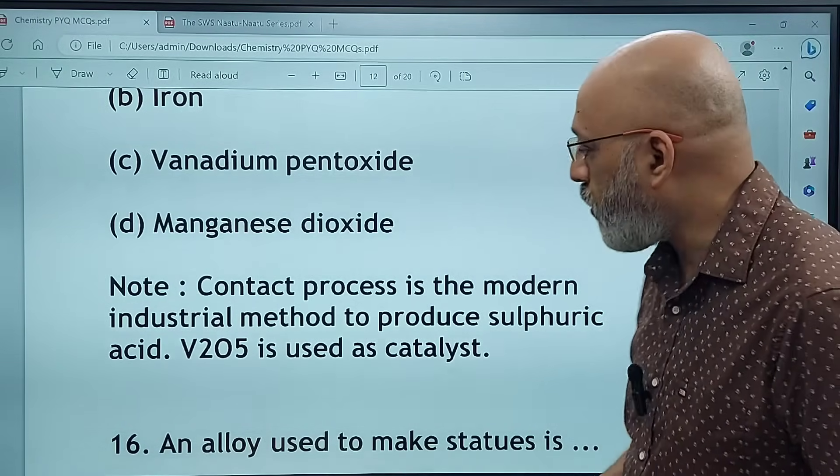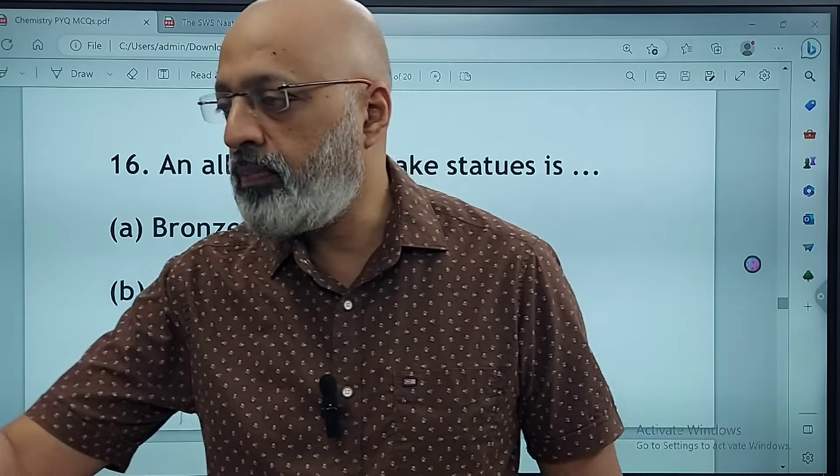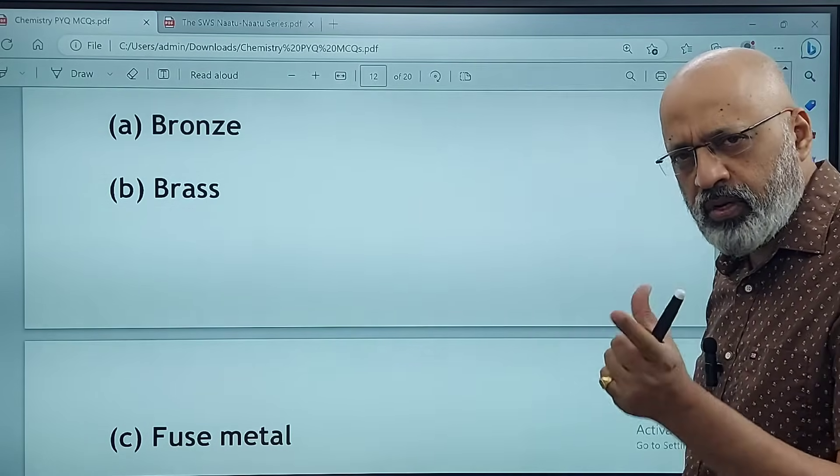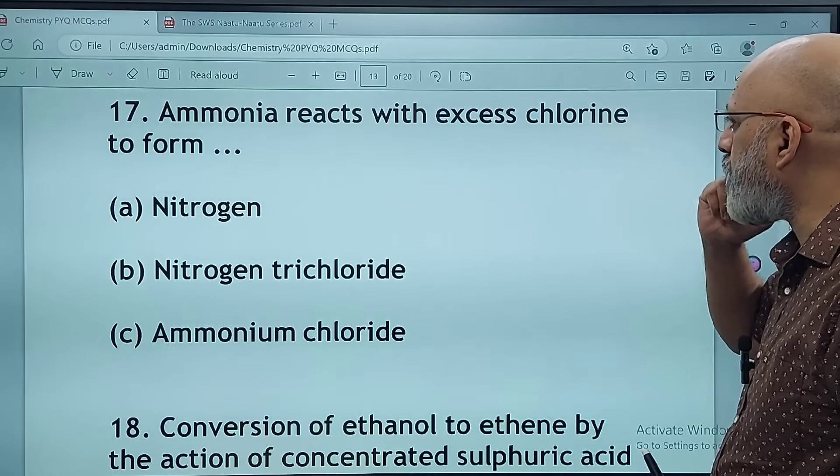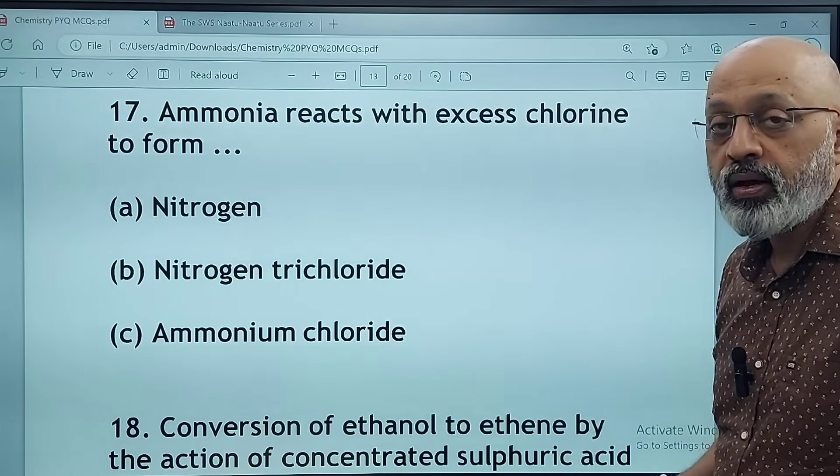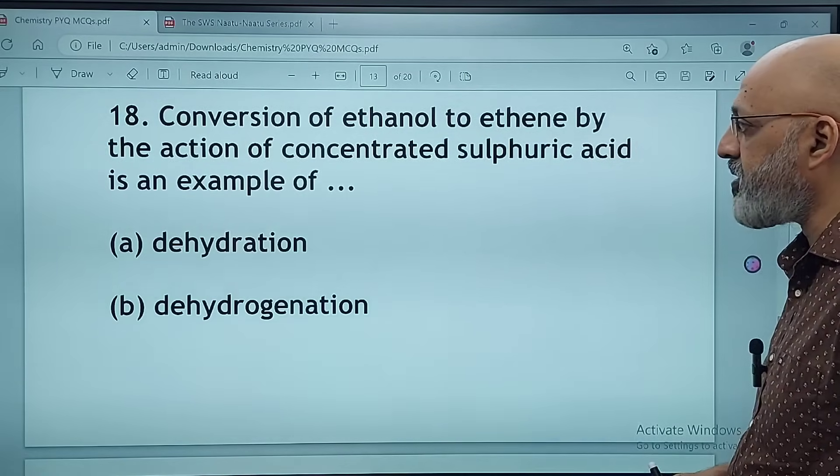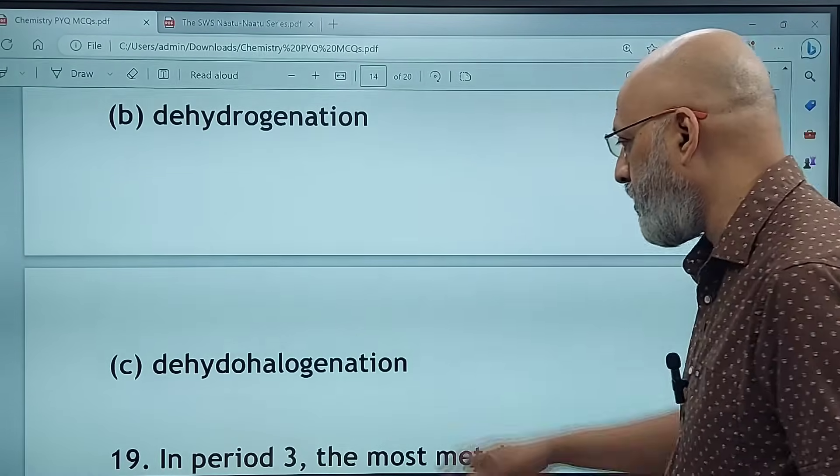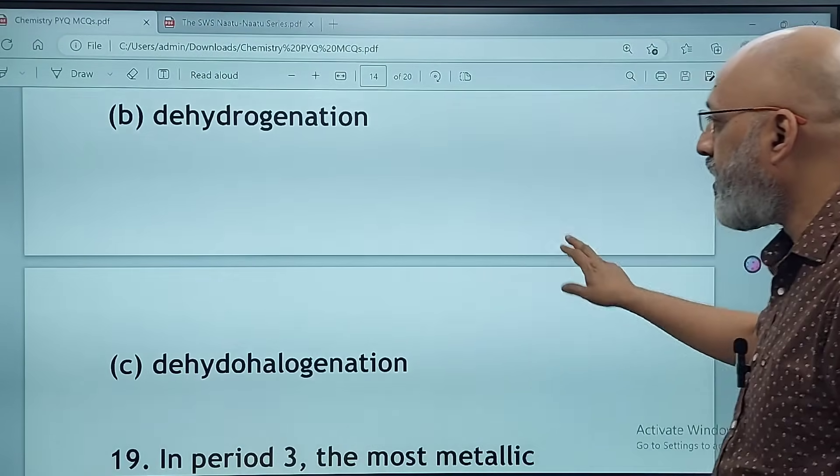An alloy used to make statues is bronze, brass, fused metal, or aluminum. The correct answer is A, bronze. Ammonia reacts with excess chlorine to form nitrogen, nitrogen trichloride, or ammonium chloride. The correct answer is B, nitrogen trichloride. Conversion of ethanol to ethene by the action of concentrated sulfuric acid is an example of dehydration, dehydrogenation, or dehydrogenation. The correct answer is A, dehydration.